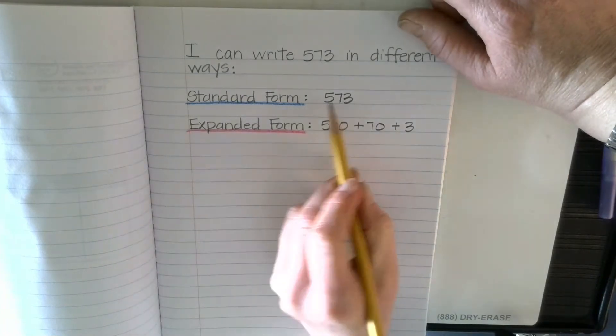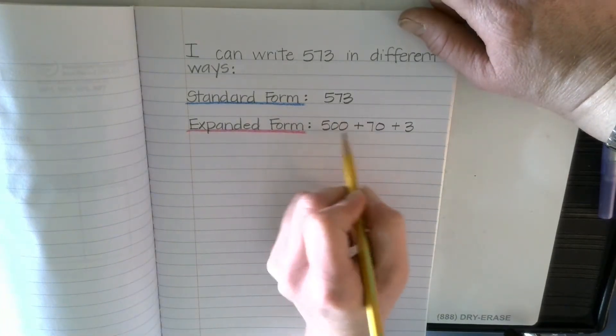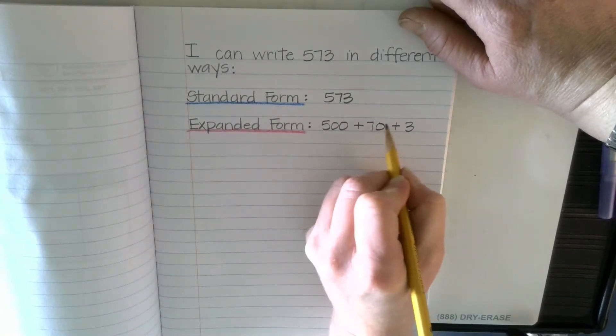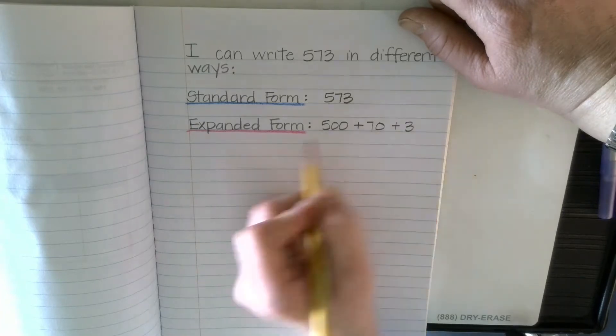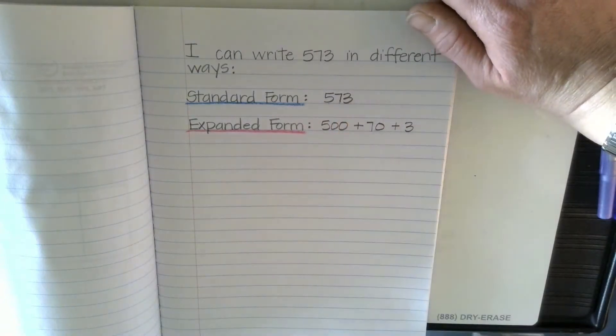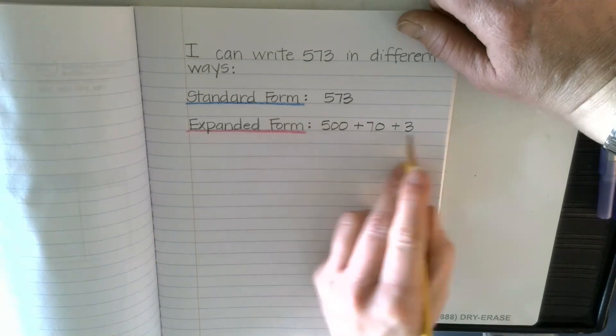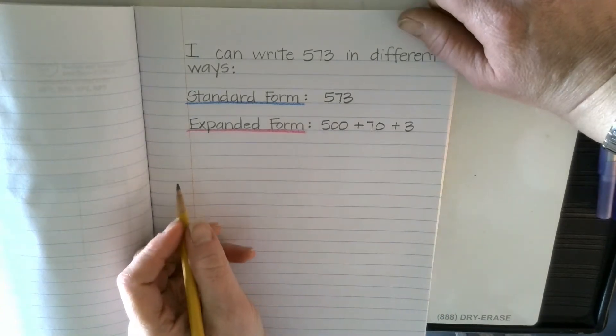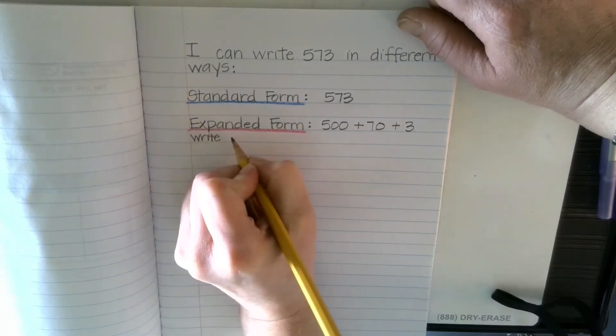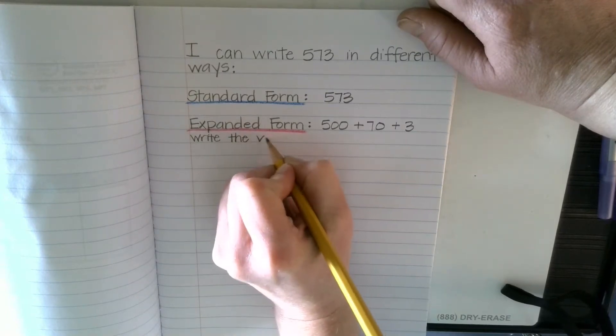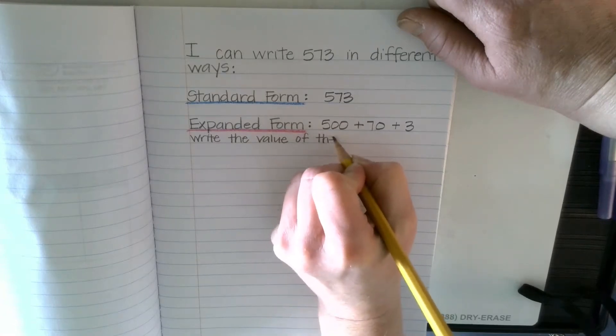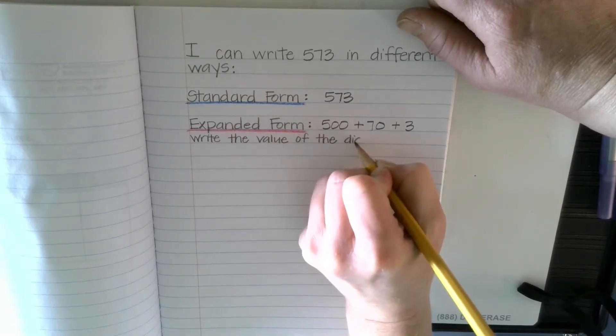As I've been correcting work, I've noticed a lot of kids are okay with the 500 part, with the hundreds and with the ones, but for some reason they're forgetting to put the zero on in the tens and just putting a 7 here. So remember, the value of the 7 tens is 70. So this is this number in expanded form, and we write the value of the digits.